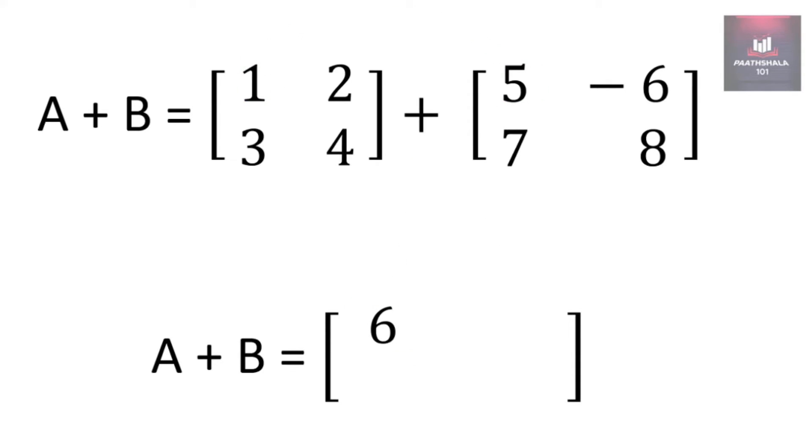Now for first row second column of A plus B, we will add first row second column of A with the first row second column of B. So 2 plus minus 6 will become minus 4.